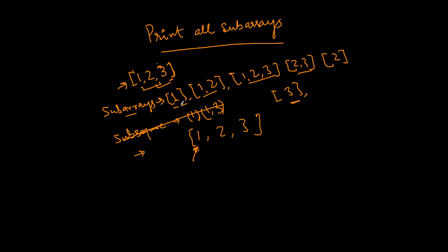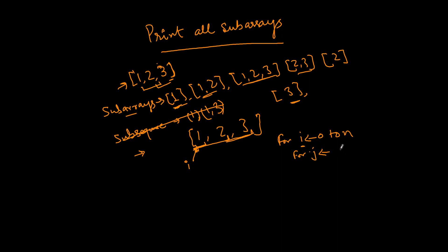For array [1, 2, 3], the first thing we need to fix is our starting point. As you can see, the starting point is 1, covering [1], [1,2], [1,2,3]. So we use a loop: for i = 0 to n, where i is our starting point. Then we iterate over the group size — the sub-array size — with for j = 1 to n.